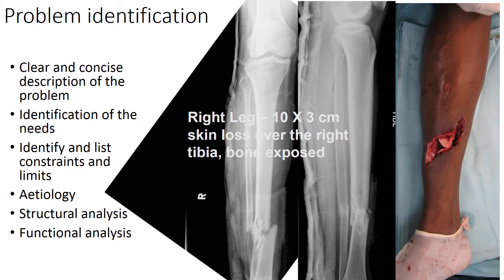In this process, one should also understand the list of constraints and limits — whether in the form of surgeon, patient, or environment. It is important to understand the mechanism of trauma so as to predict the extent of injuries and possible complications in the reconstruction process. There must be an assessment of the structural nature of the limb and what we are trying to achieve at the end — beginning with the end in mind and assessing the functional results we hope to achieve based on our current assessment of the limb.